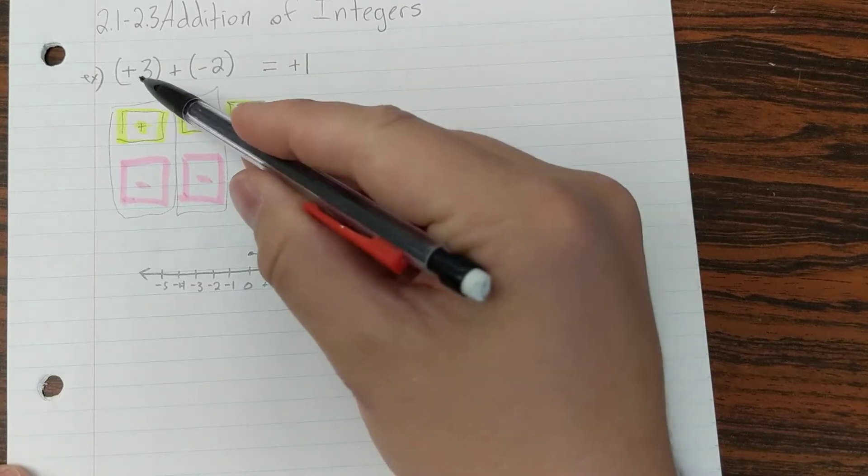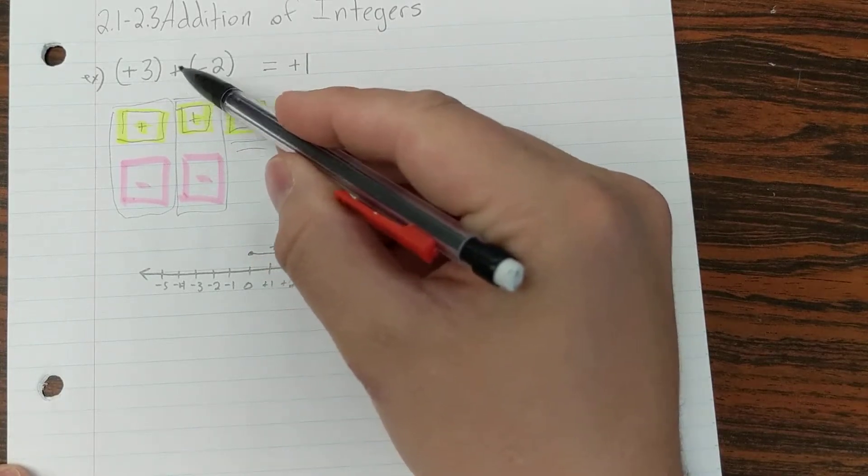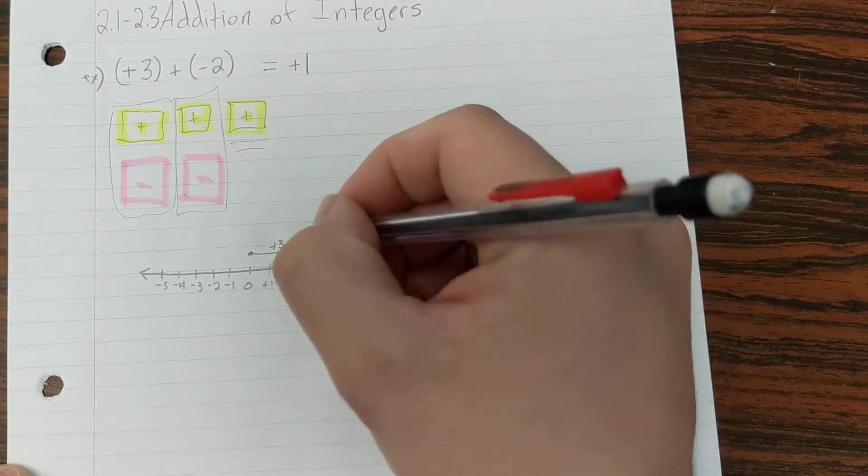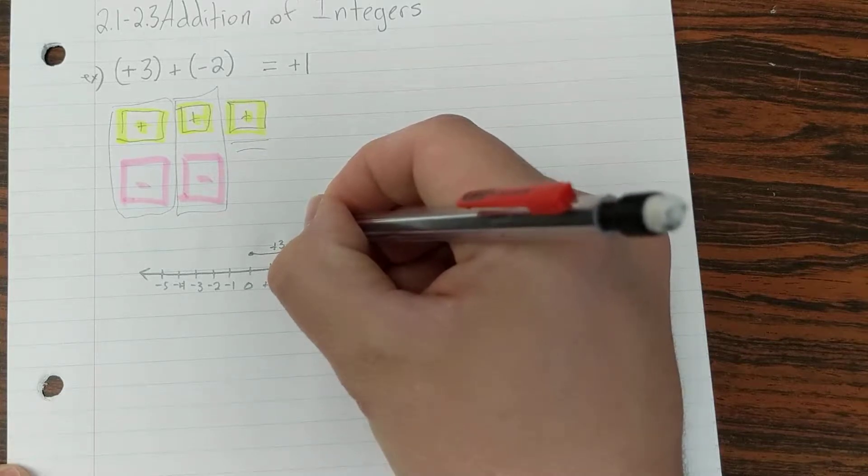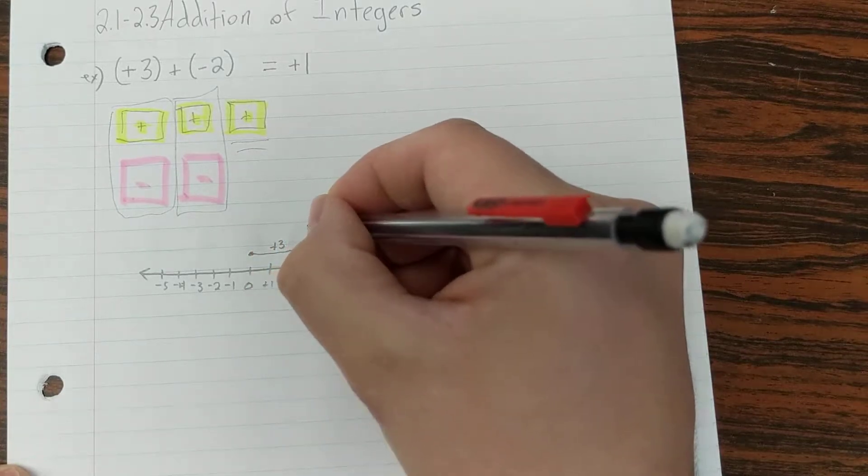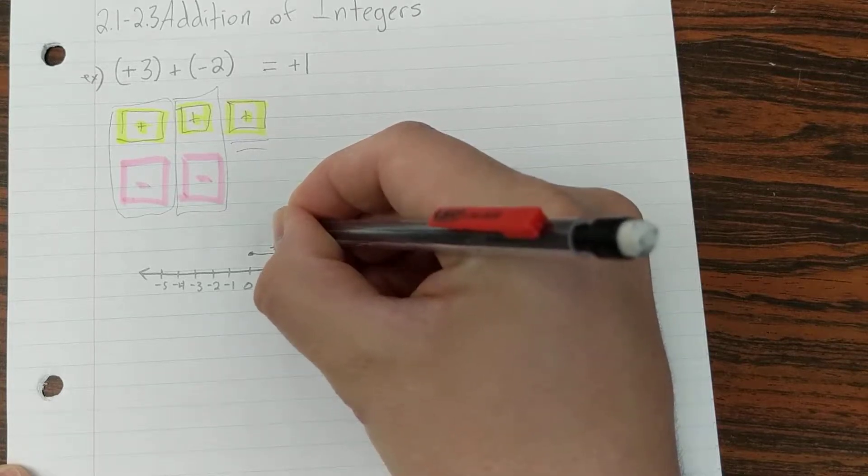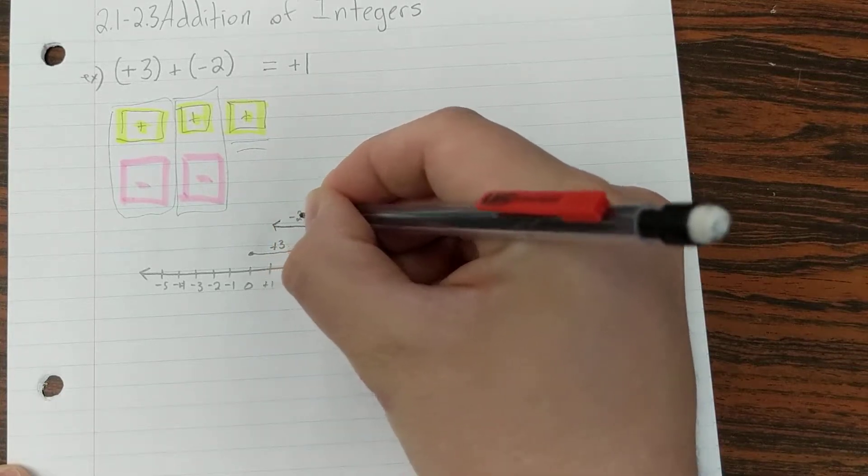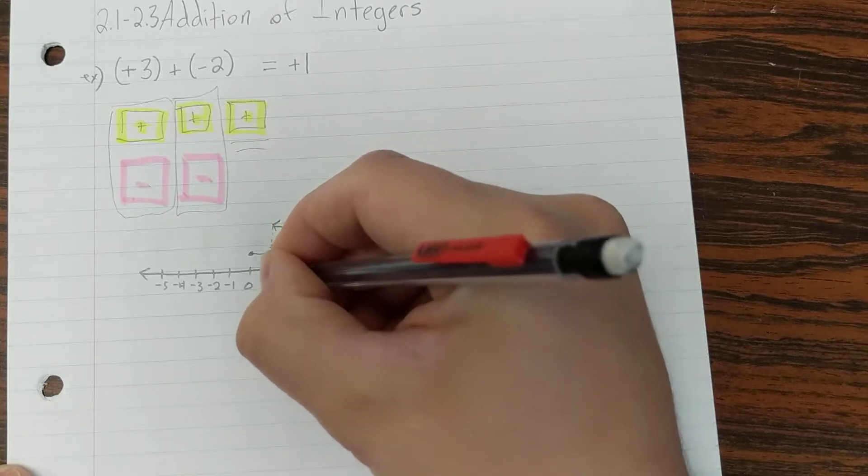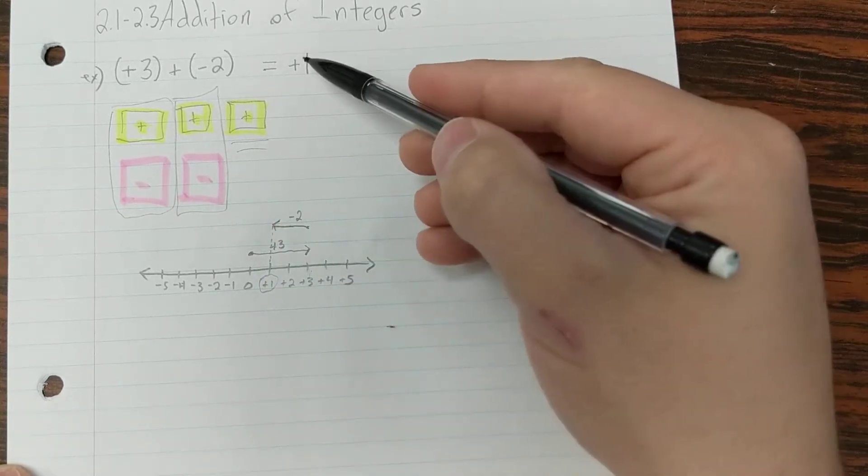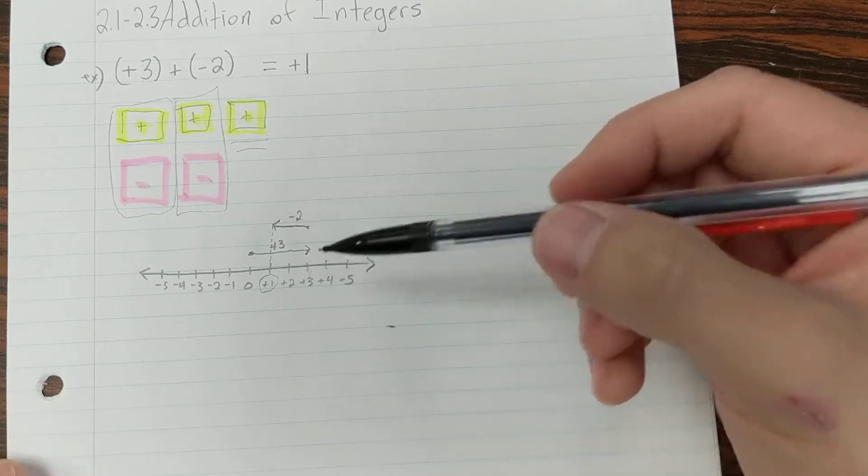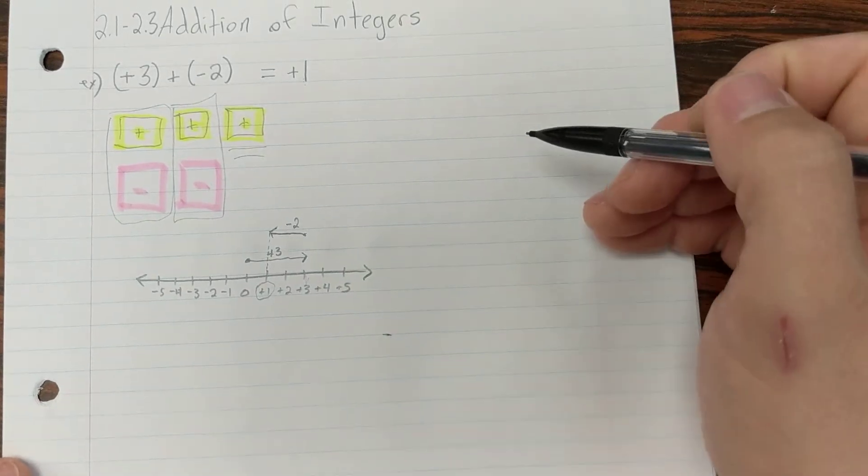The next step is to go at positive 3, and now we're going to add a negative 2 to it. So adding a negative 2, we're going to start where we ended up. We went 3, and then we took two steps backwards: 1, 2. Negative is left. And where did we end up? Positive 1. What's our answer? Positive 1. So that's how you can use a number line to add integers.